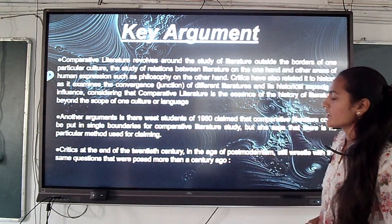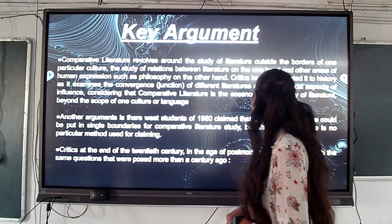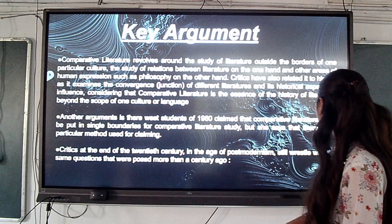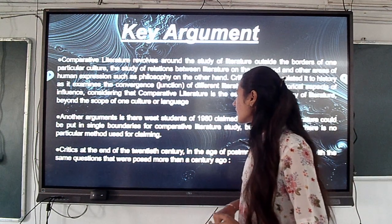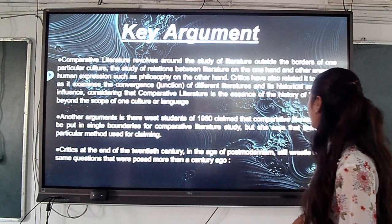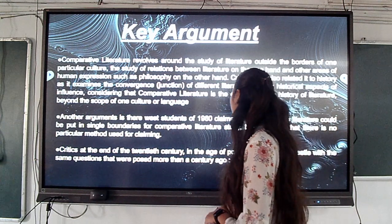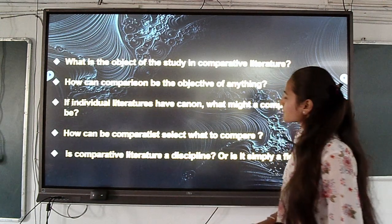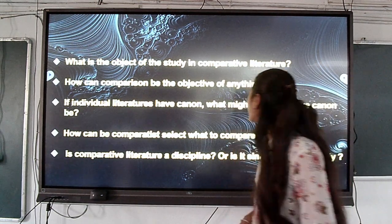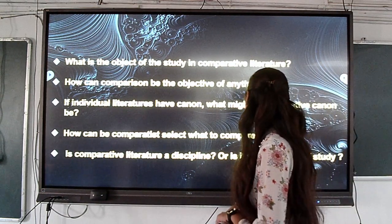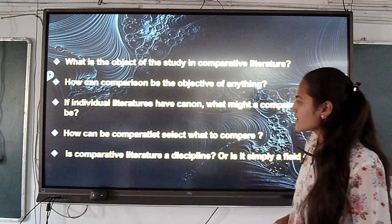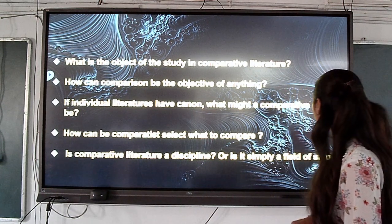Another argument is that the West student of 1960 claimed that comparative literature could set single boundaries for comparative literature study, but she says that there is no patriarchal method used for the discipline. Critics at the end of the 20th century, in the age of postmodernism, still dealt with questions posed more than a century ago: what is the object of study in comparative literature? How can one compare? If individual literatures have a canon, what might a comparative canon be? And is comparative literature a discipline or simply a field of study?